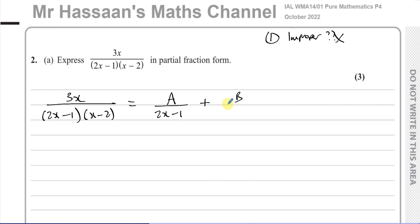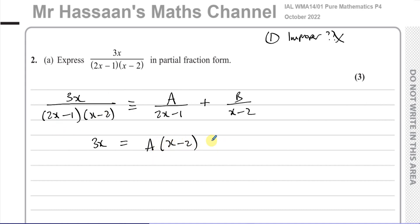So we write: a over (2x−1) plus b over (x−2). Then we multiply both sides of this identity by (2x−1)(x−2), so this side becomes 3x, and the right side becomes a(x−2) plus b(2x−1) — each fraction's denominator cancels with the corresponding factor from the other fraction.